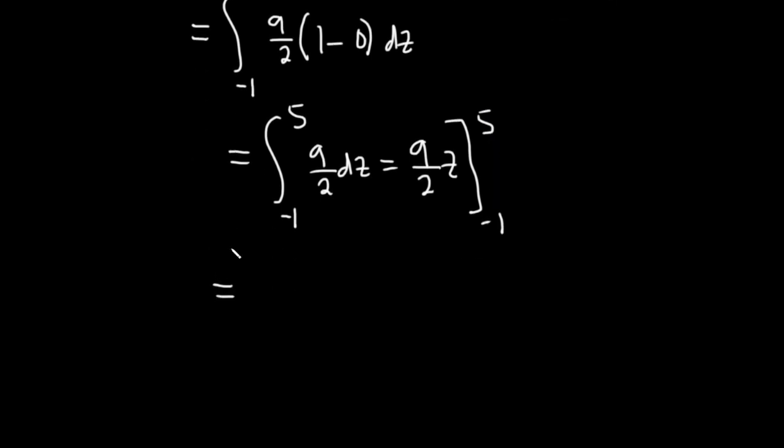So this is equal to 9 halves. Plug in 5, subtract, plug in negative 1. So this is 9 halves. 5 plus 1 is 6. So we get 54, because 6 times 9 is 54, over 2. So we get the answer of 27.